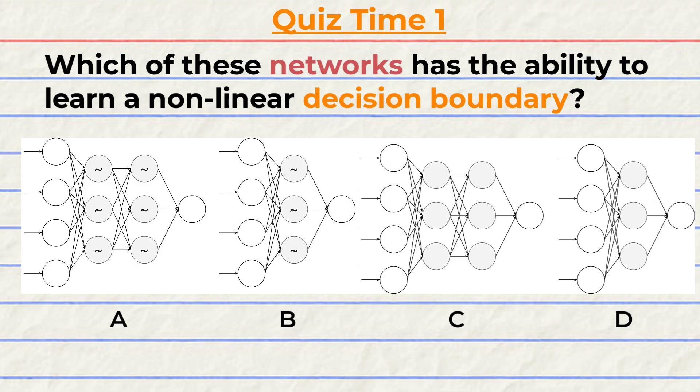Quiz time. Have you been paying attention? Let's quiz you to find out. Which of these four networks has the ability to learn a non-linear decision boundary? Note that multiple answers may be correct. And I will give you a few seconds to answer this question. The correct options are A and B. Did you get them right? Give your reasoning in the comments below and let's have a discussion.